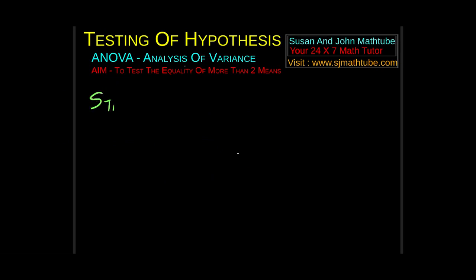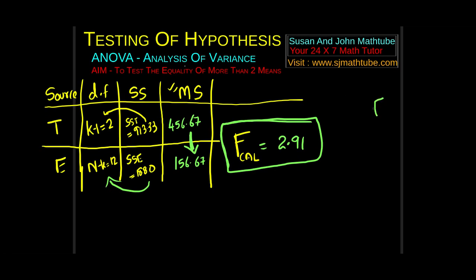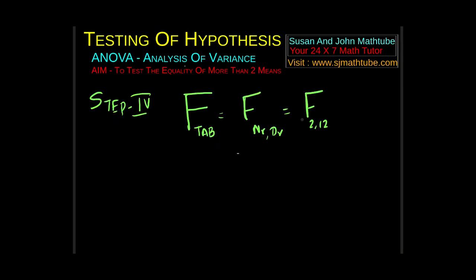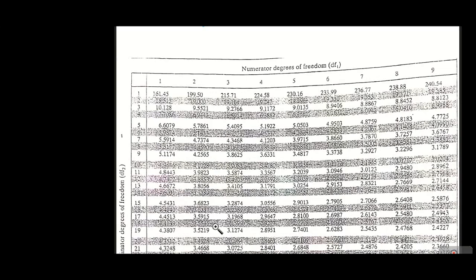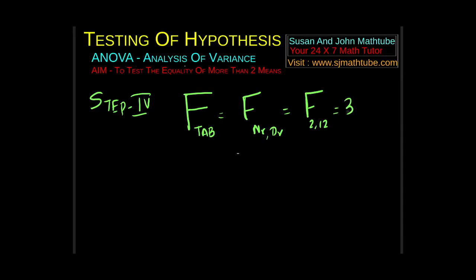As usual, step number 4. In step number 4, what we do is we find the tabulated value. Here the test is F, so we find F tabulated. The format for F is numerator, denominator. F is the ratio of variances. Numerator is treatment and denominator is error. That means 2 and 12. The degree of freedom is right here. You take the F table. You will be able to see numerator and here it is written denominator. So 2 and 12. You just find this value. You can use your table: 3.8853.